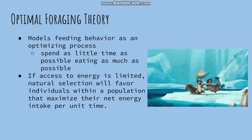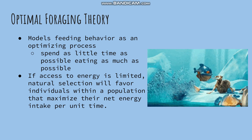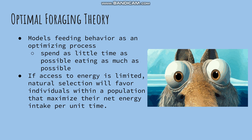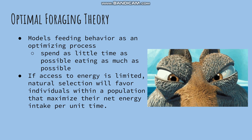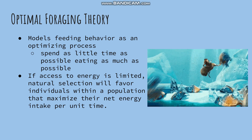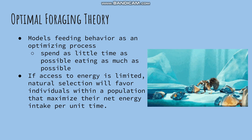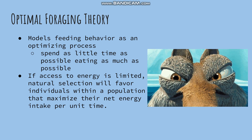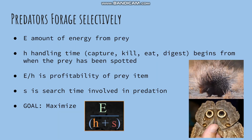Optimal foraging theory models feeding behavior as an optimizing process — organisms must work smarter, not harder, and spend as little time as possible eating as much as possible. Natural selection will favor individuals that maximize their net energy intake per unit time. Optimal foragers capture and consume food with the greatest potential energy density while expending the least amount of time and energy. Predator foraging behavior can be modeled with the goal of maximizing the equation: energy over handling time plus search time.